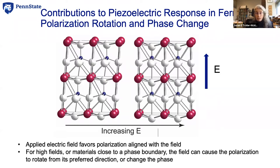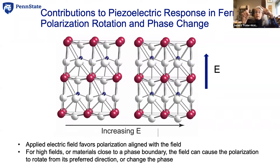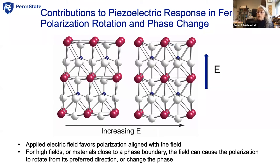A second possible way of getting intrinsic piezoelectric response is to take a material where the titanium atoms are displaced towards one of the corners of the cube — off at an angle. If I apply an electric field in this direction, I try to rotate that polarization to line up with the applied field, and as it does so, the material changes shape. That's another contribution to the intrinsic piezoelectric coefficient — polarization rotation.